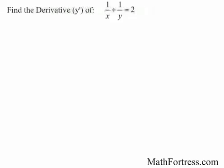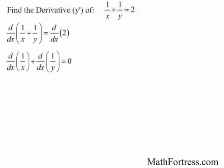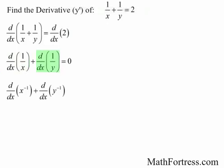Let's try the next one. Find the derivative of 1 over x plus 1 over y equals 2. The first step is to take the derivative of both sides. The derivative of 1 over x is the same thing as the derivative of x raised to the power of negative 1, and the derivative of 1 over y is the same thing as the derivative of y raised to the power of negative 1. And the derivative of a constant is just 0.